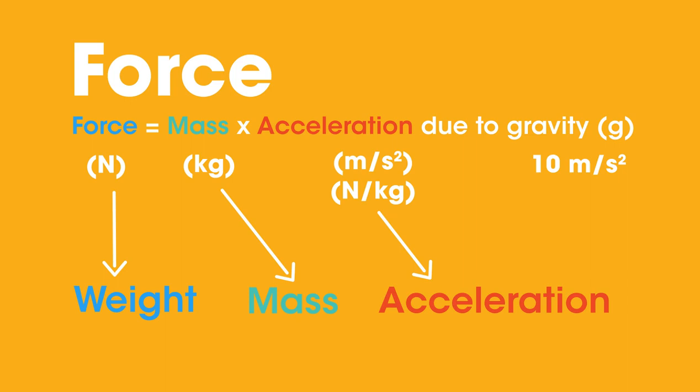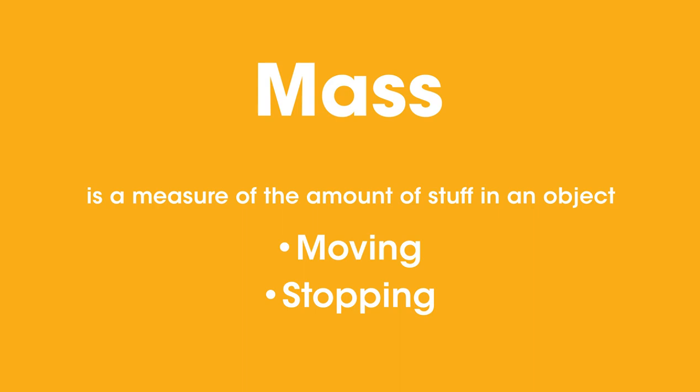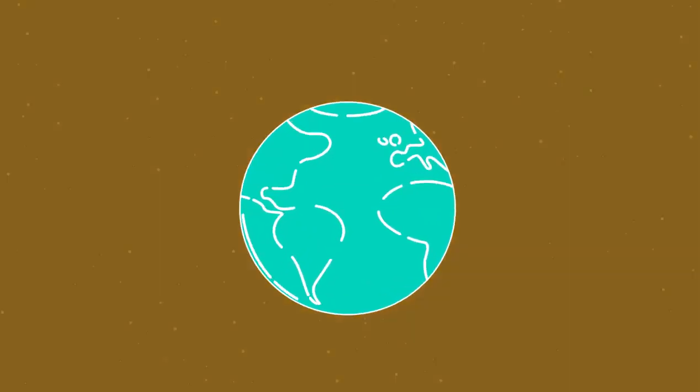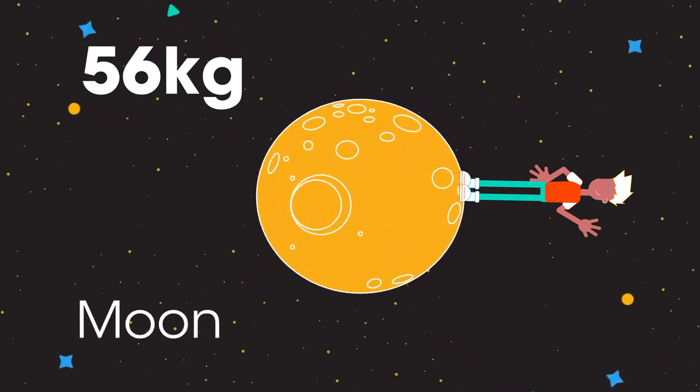Okay, back to mass and weight. Remember that mass is a measure of the amount of stuff in an object and gives a measure of how difficult it is to get moving or to stop it. It never changes. For example, my mass on Earth is 56 kilograms. On the moon, I would still have a mass of 56 kilograms.